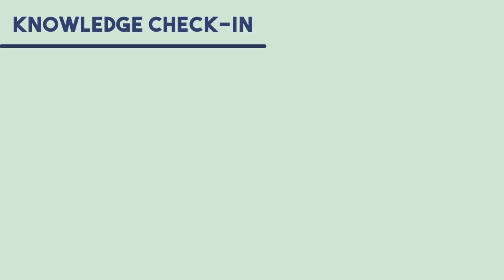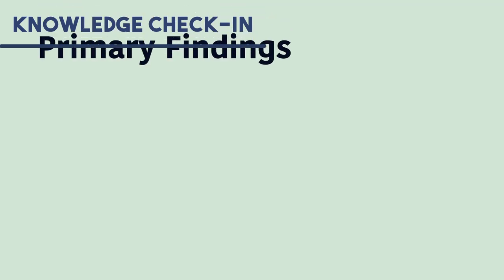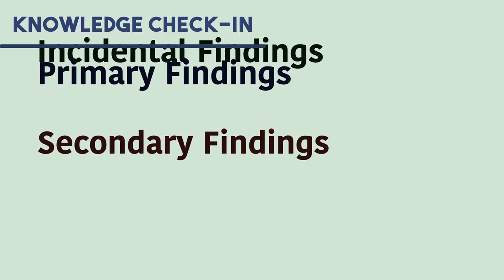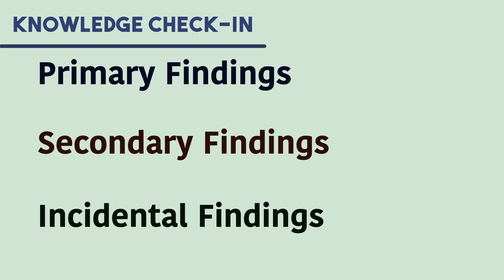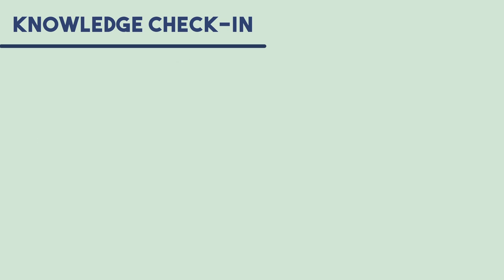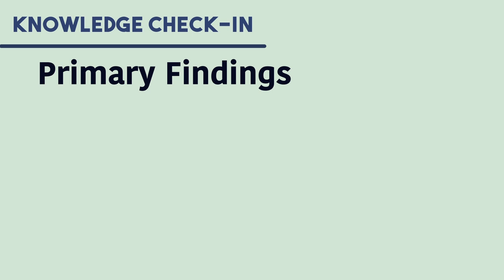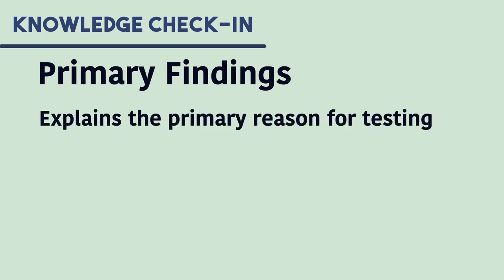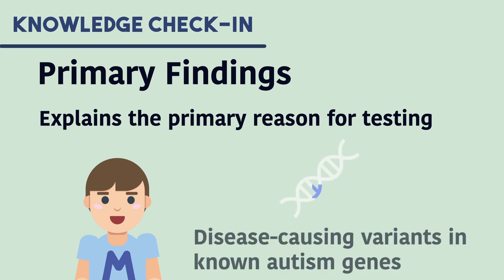Time for a knowledge check-in. Now that we have gone through the different types of findings, let's go over each one by one. Please follow along and make sure you understand the different types of findings. First type of result is a primary finding. The genetic finding in this type explains the primary reason for testing. For our example with Michael, primary findings would include any disease causing variants in known autism-related genes.